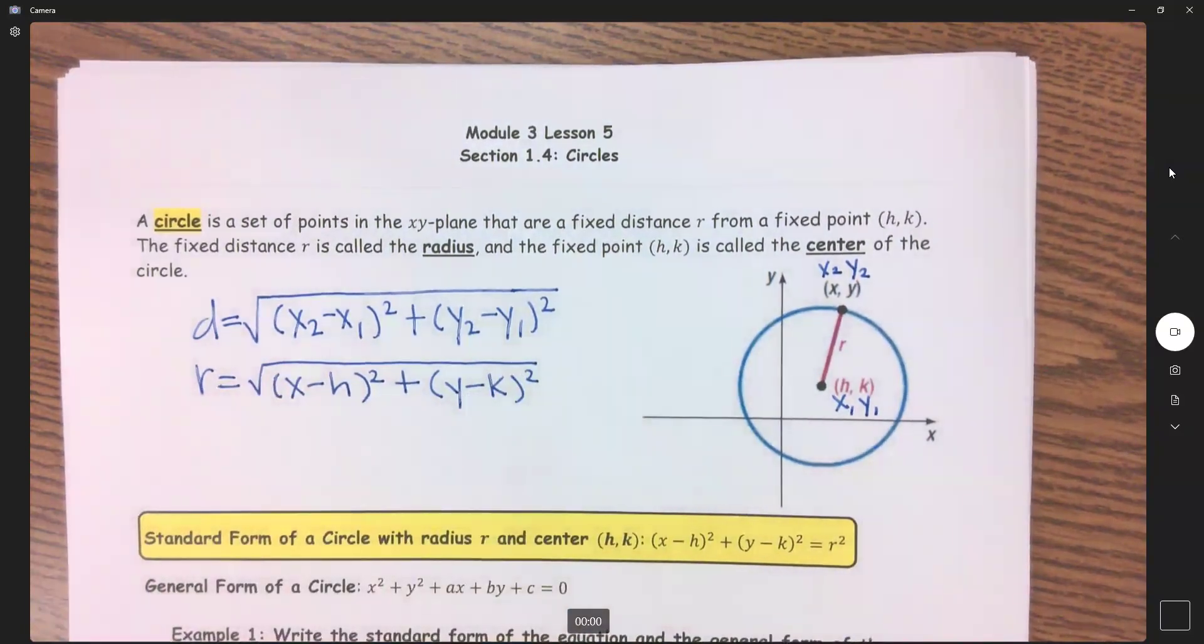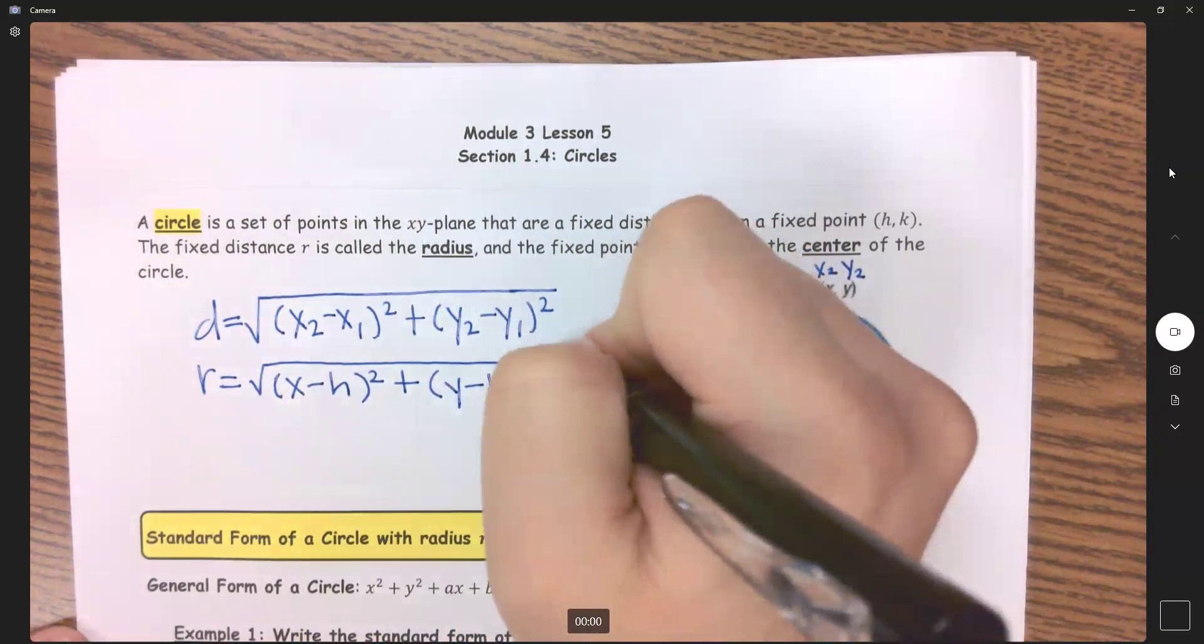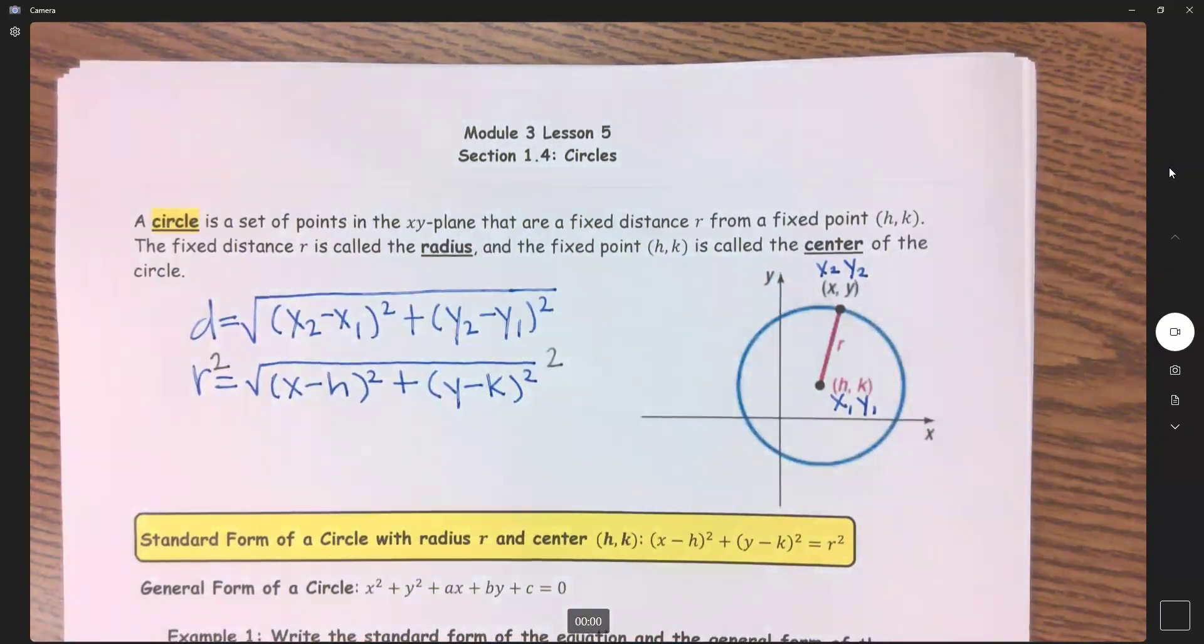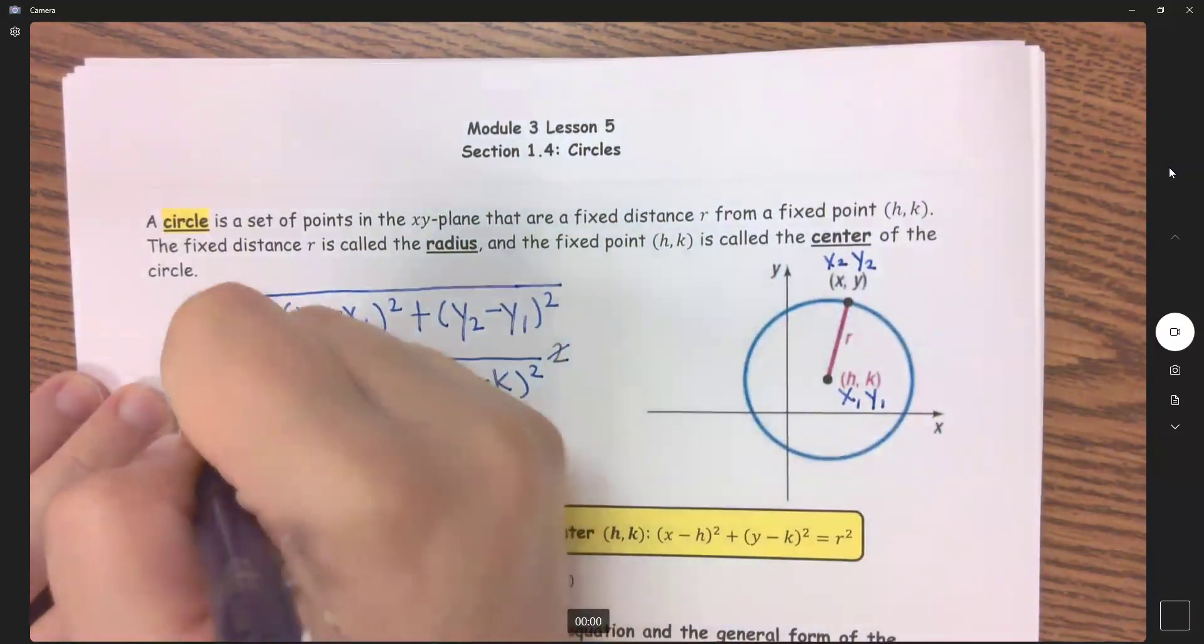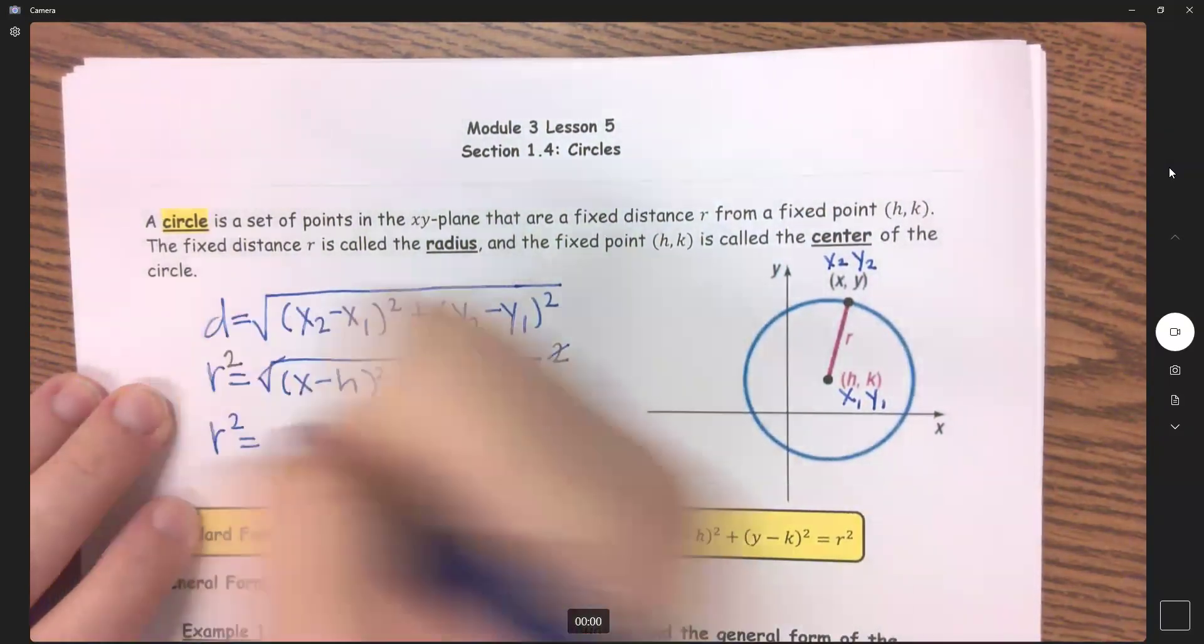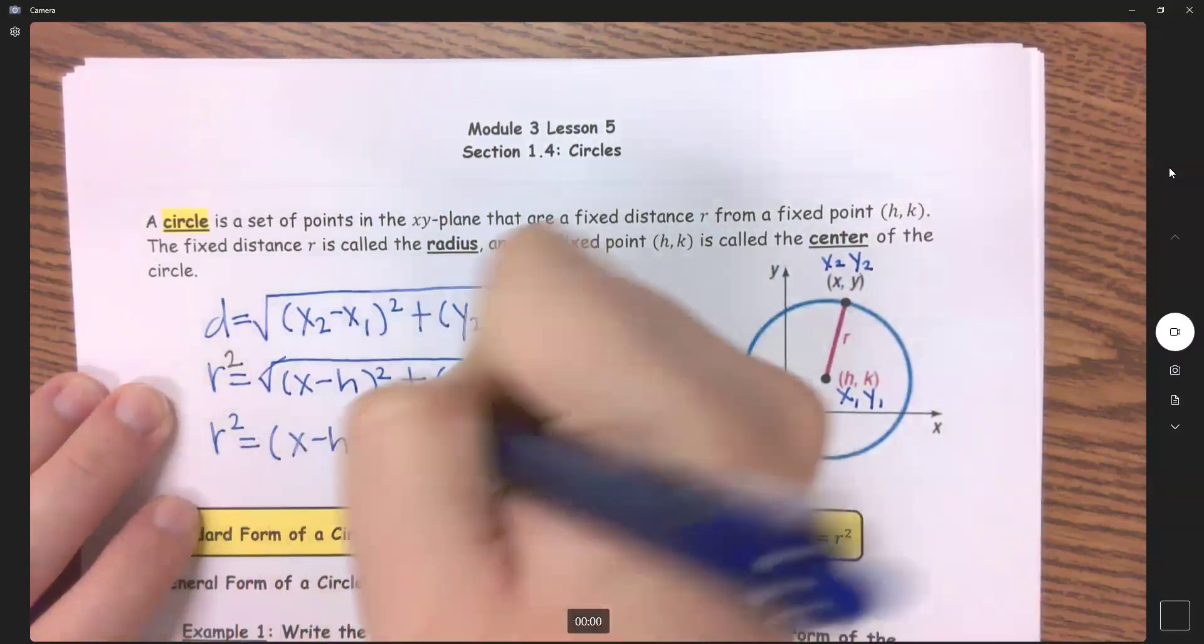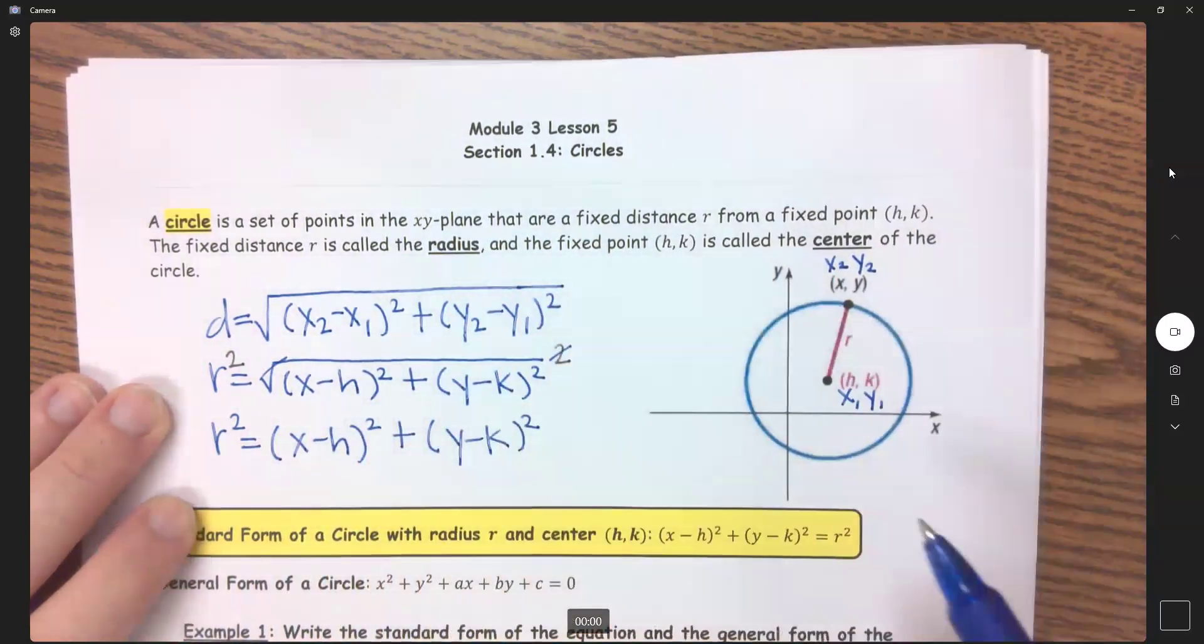And if I wanted to get rid of this square root, the opposite of a square root is the square. So my square root and square cancel. So now I'm left with r squared equals (x minus h) quantity squared plus (y minus k) quantity squared.